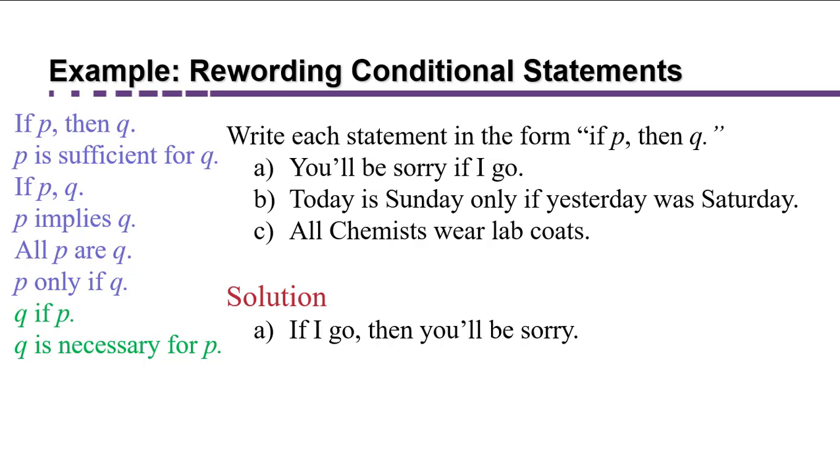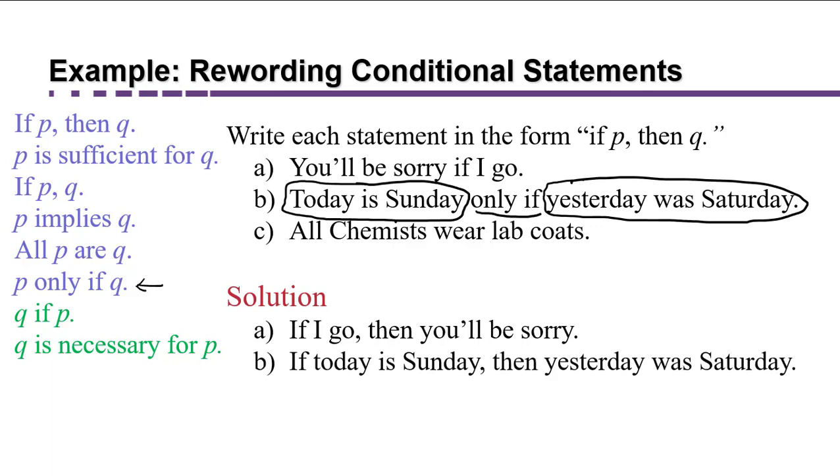Now let's look at part B. Today is Sunday only if yesterday was Saturday. The only if is a big clue that we're going to be looking at a P only if Q pattern. So that means that the P comes before the Q. So your antecedent P is today is Sunday. That's going to be the if part of the statement. And the consequent is going to be yesterday was Saturday, the then part of the statement. This tricks people all the time because they see that if. But when you attach only to if you get a then. So it actually is equivalent to saying if today is Sunday then yesterday was Saturday.